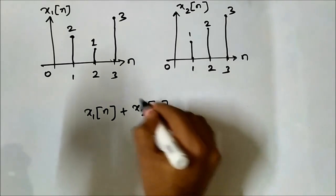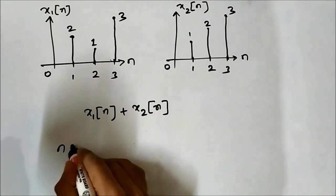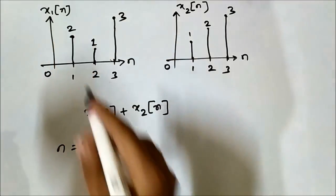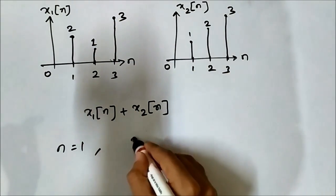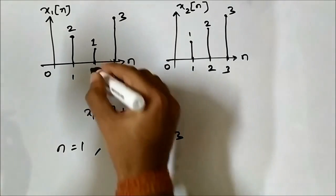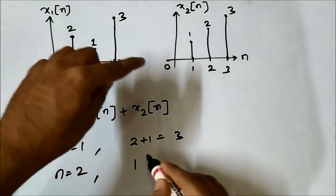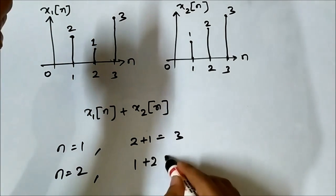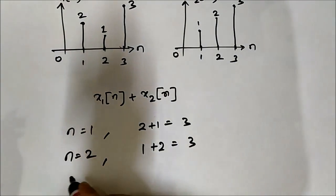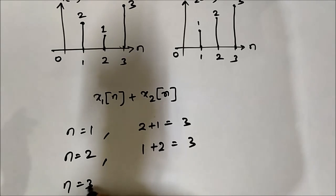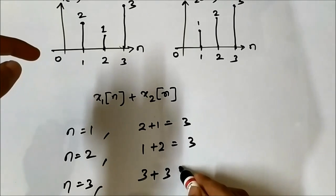The signal addition operation x1[n] plus x2[n] simply means at each discrete time instance we just have to add the signals. So at n=1 it will be 2 plus 1, which equals 3. At n=2, x1[n] is 1 and x2[n] is 2, so that is also 3.